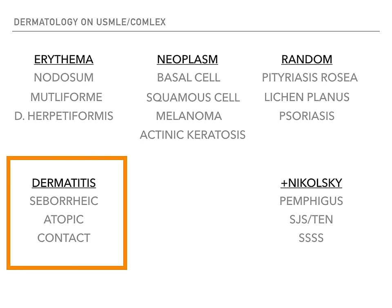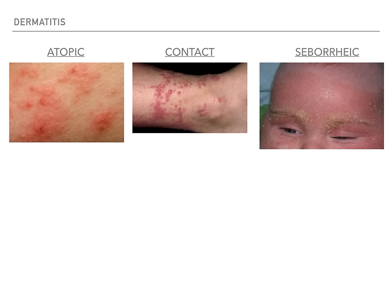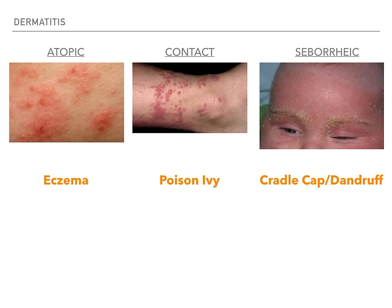The dermatitis category is probably the easiest of the five. You have atopic dermatitis, aka allergic dermatitis, also known as eczema. You have contact dermatitis — also known as poison ivy. And seborrheic dermatitis — cradle cap, aka dandruff.